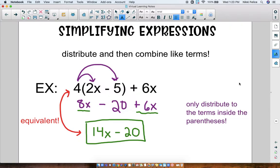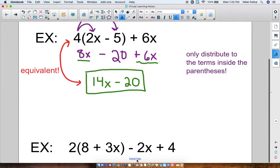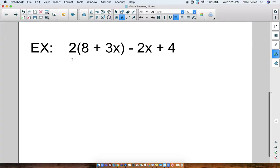Okay, so this is how we simplify. Distribute and combine. Let's do another one together. Okay, so number 2 here. I have 2 times 8 plus 3x minus 2x plus 4. Okay, so what number is getting distributed? It's the 2 because 2 is the number right in front of the parentheses.